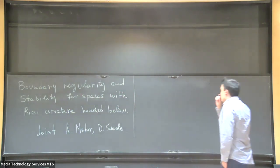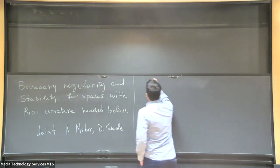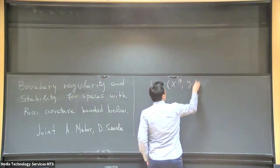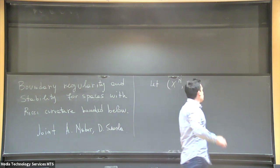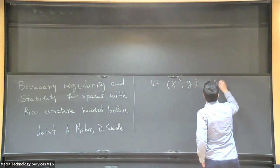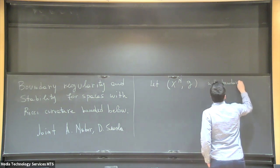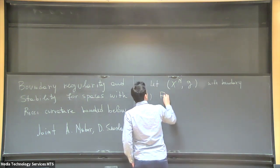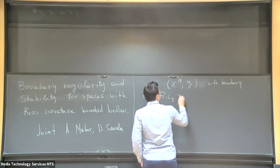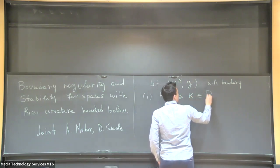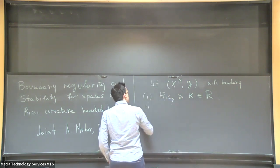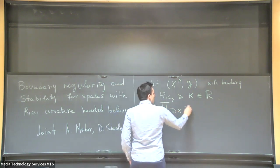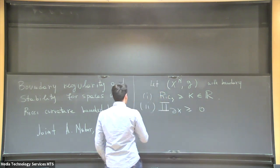Let me start by introducing the problem. I want to consider smooth manifolds of dimension capital N. Here G denotes the smooth Riemannian metric with boundary satisfying the following conditions. The first assumption is a lower bound on the Ricci curvature in the interior, where K is a real constant. The second assumption is a lower bound on the second fundamental form of the boundary, which I assume is non-negative.